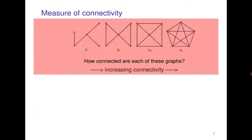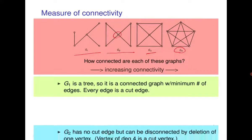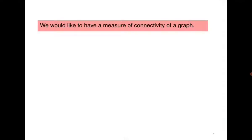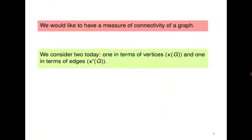Consider the following example. You can see connectivity in increasing order: the first graph has a cut vertex as well as a cut edge; the second graph has a cut vertex but does not have a cut edge; the third graph does not have a cut vertex or cut edge; and the fourth graph is a complete graph. So we have connectivity in increasing order.